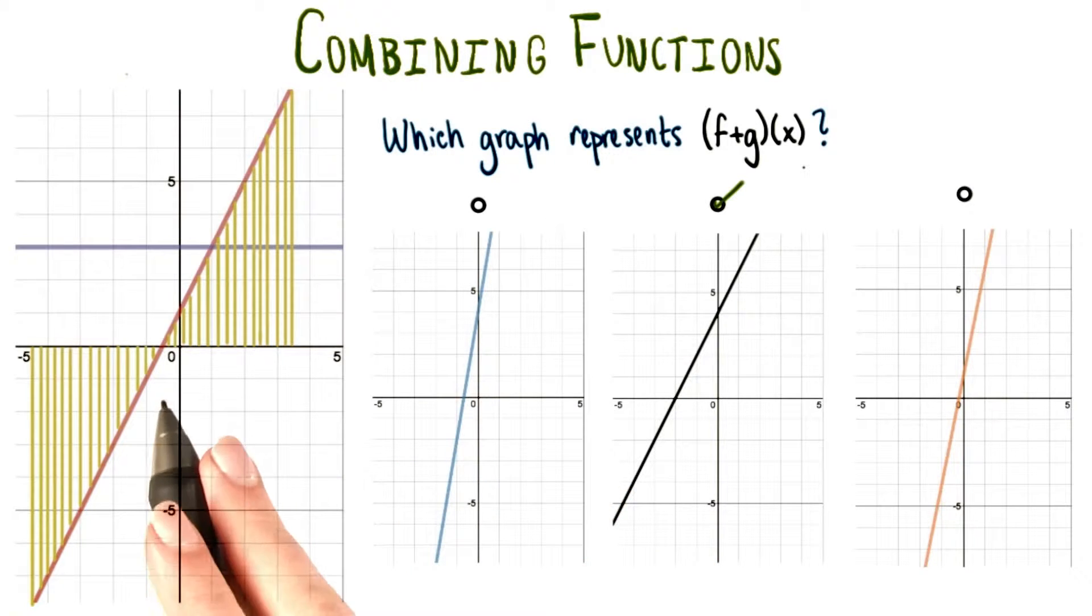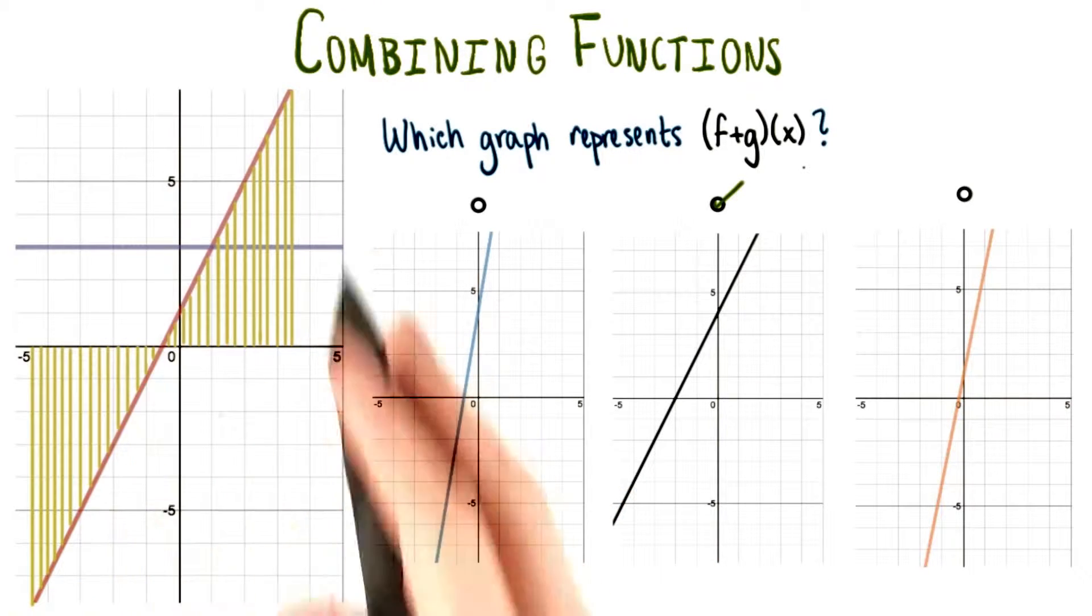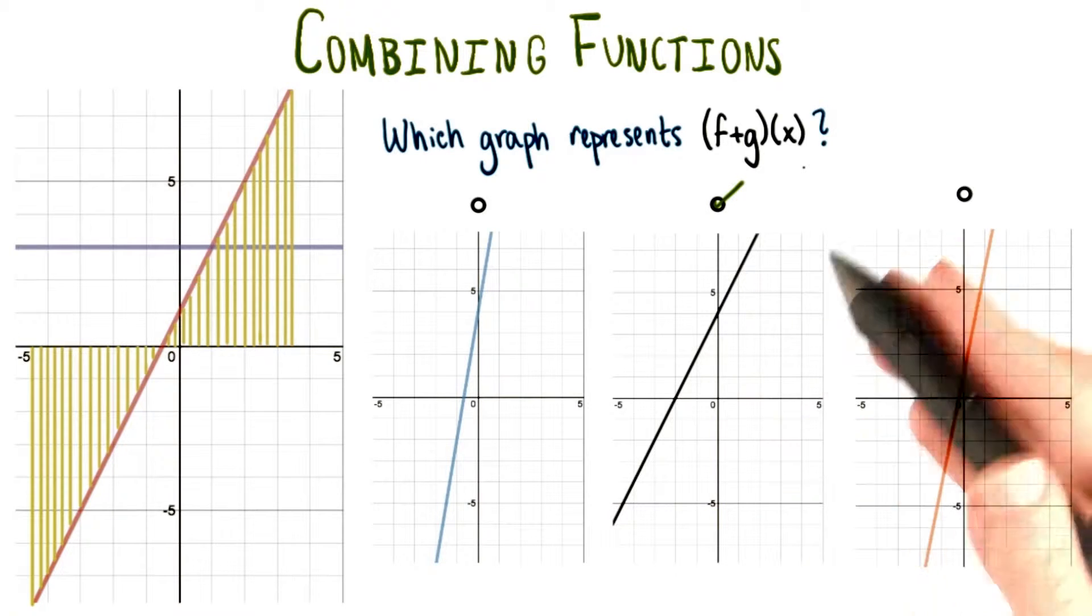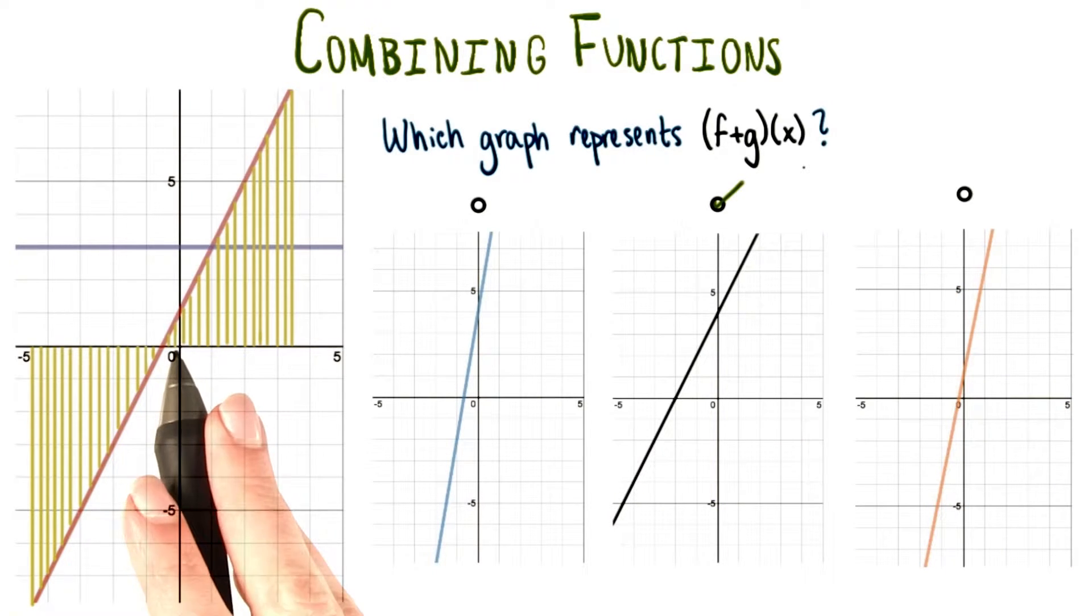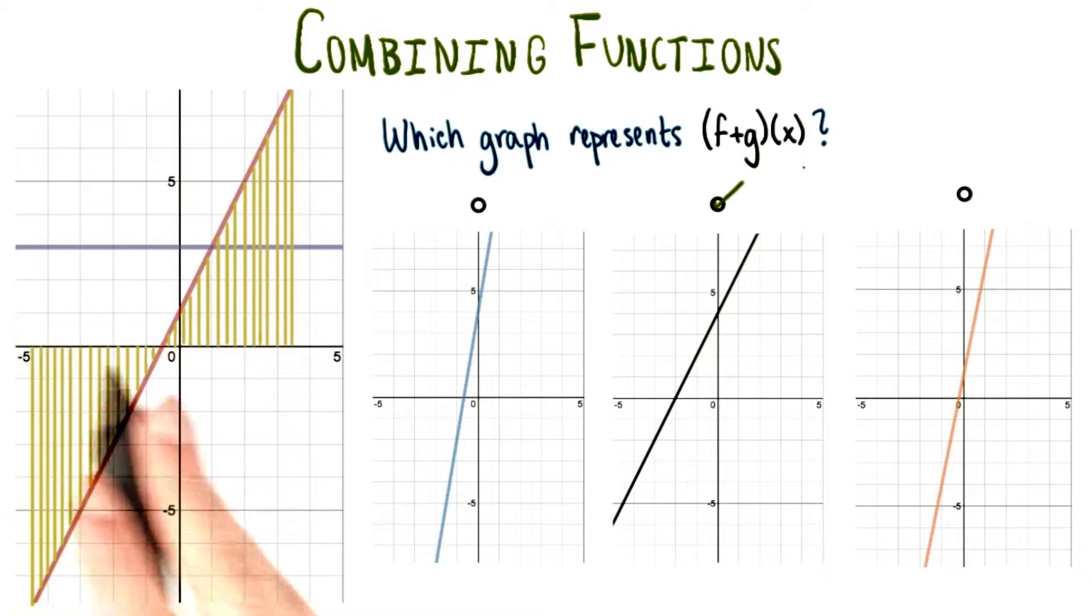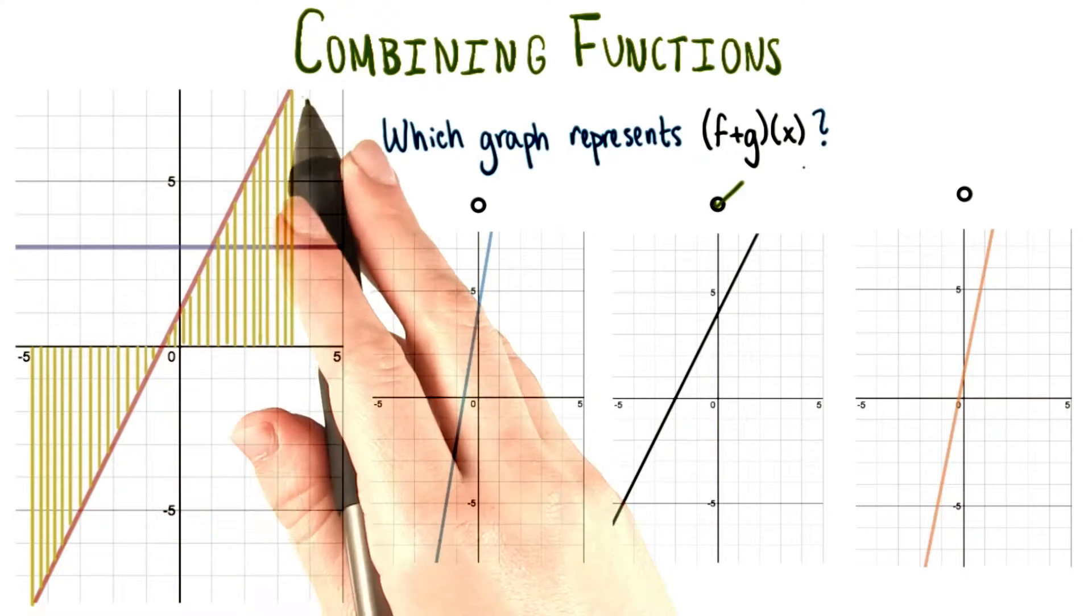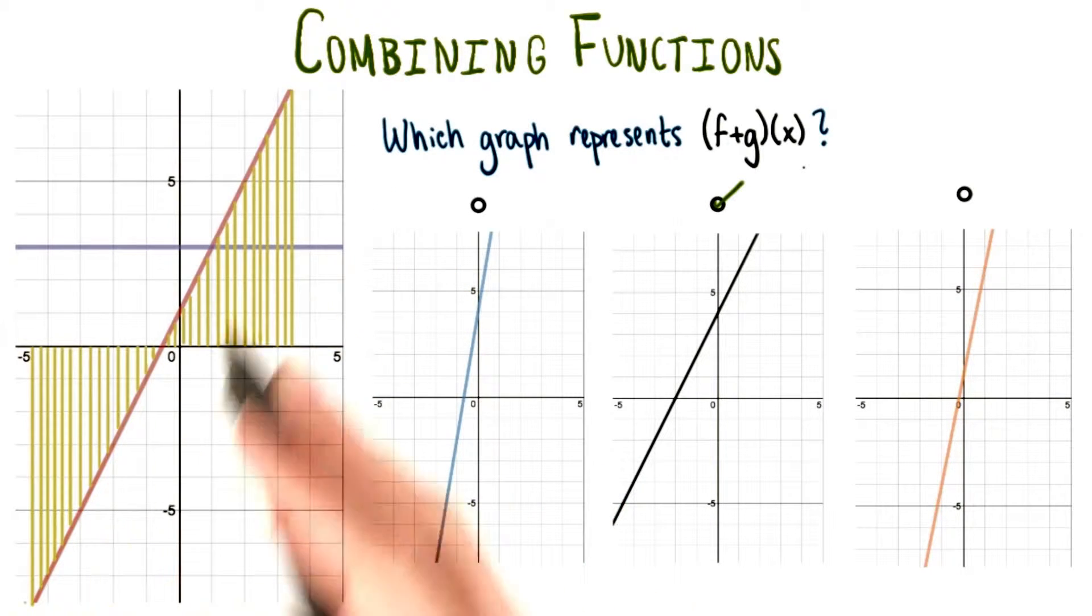So let's look at what's actually happening here to our two curves on this coordinate plane to create this black line over here. What I've drawn right now is a bunch of lines going from the x-axis up to our curve, or our line rather, f of x.